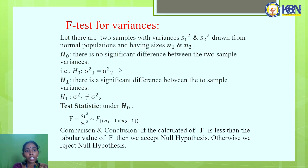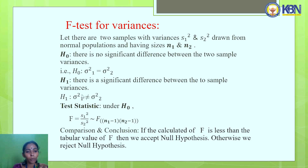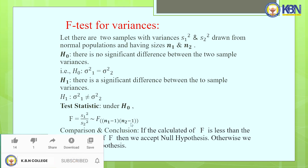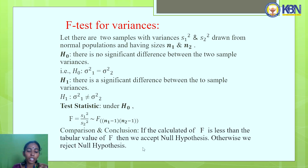F-test for variances: Let there be two samples with variances s₁² and s₂² drawn from normal populations with sizes n₁ and n₂. The null hypothesis is that there is no significant difference between the two population variances: H₀: σ₁² = σ₂². The alternative hypothesis is that there is a significant difference: H₁: σ₁² ≠ σ₂². The test statistic under H₀ is F = s₁²/s₂², which follows the F-distribution with (n₁−1, n₂−1) degrees of freedom. If the calculated F is less than the tabular F, accept the null hypothesis; otherwise reject it.